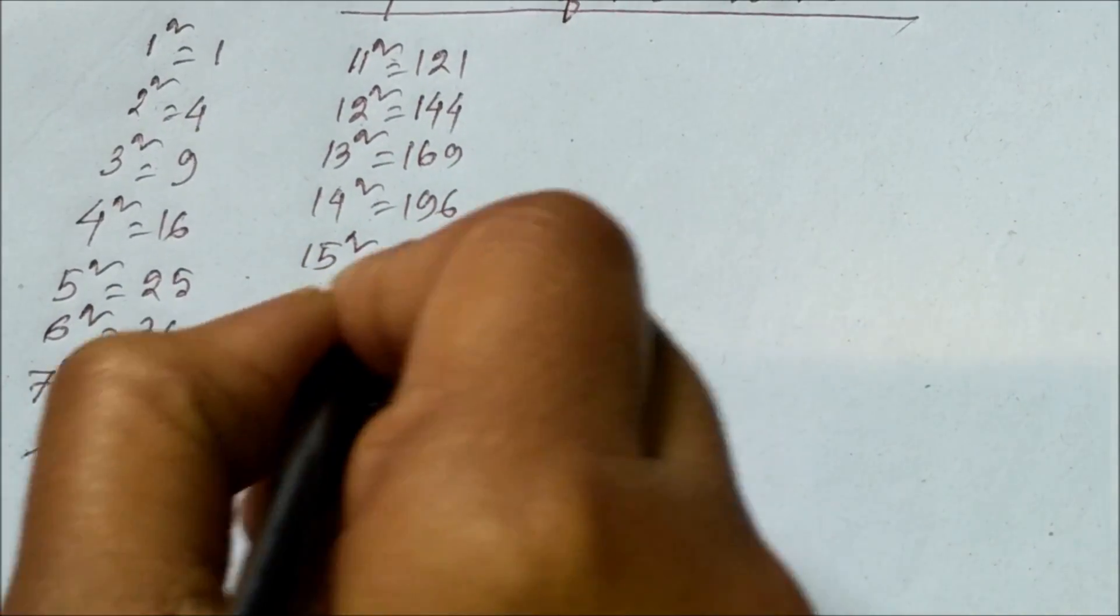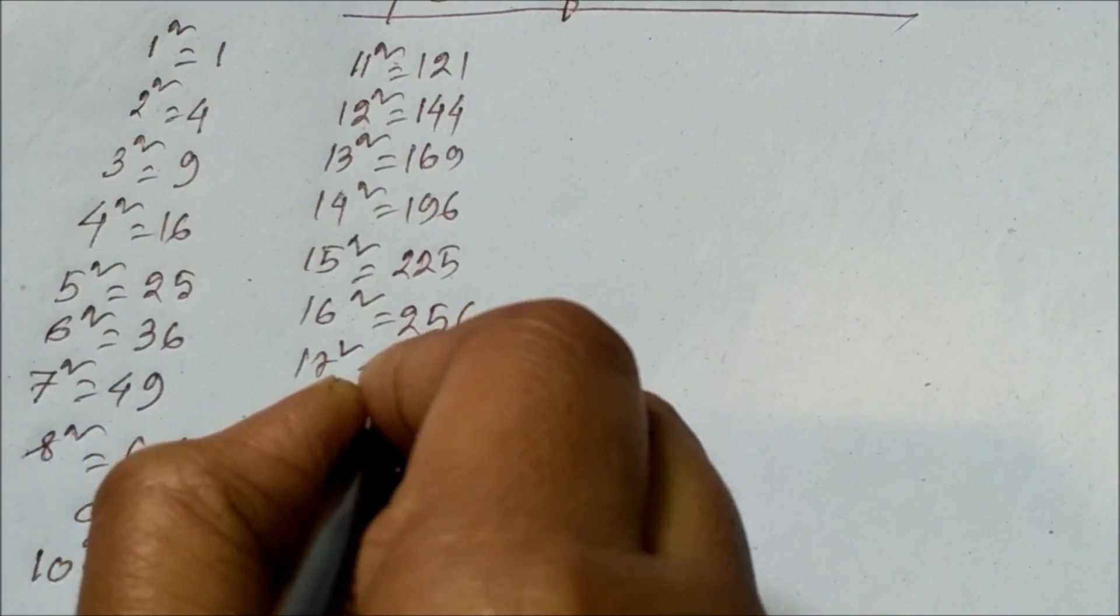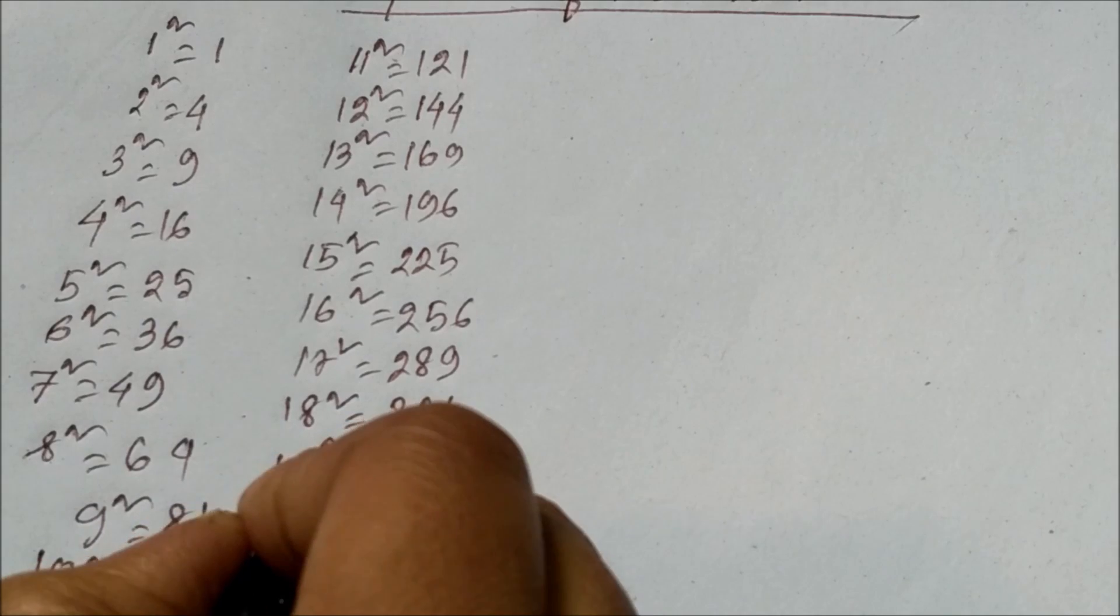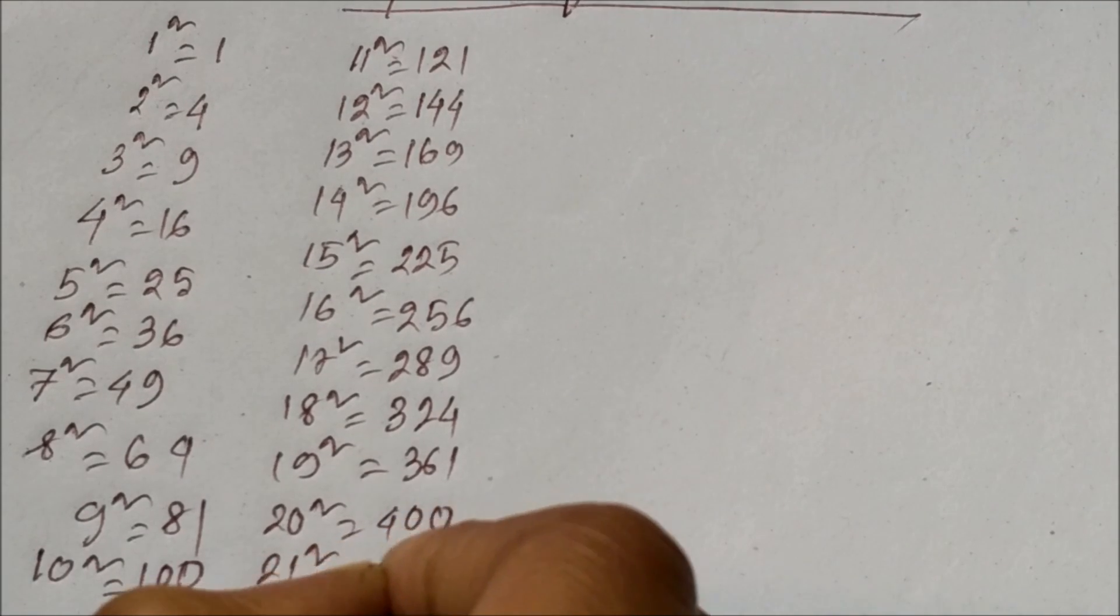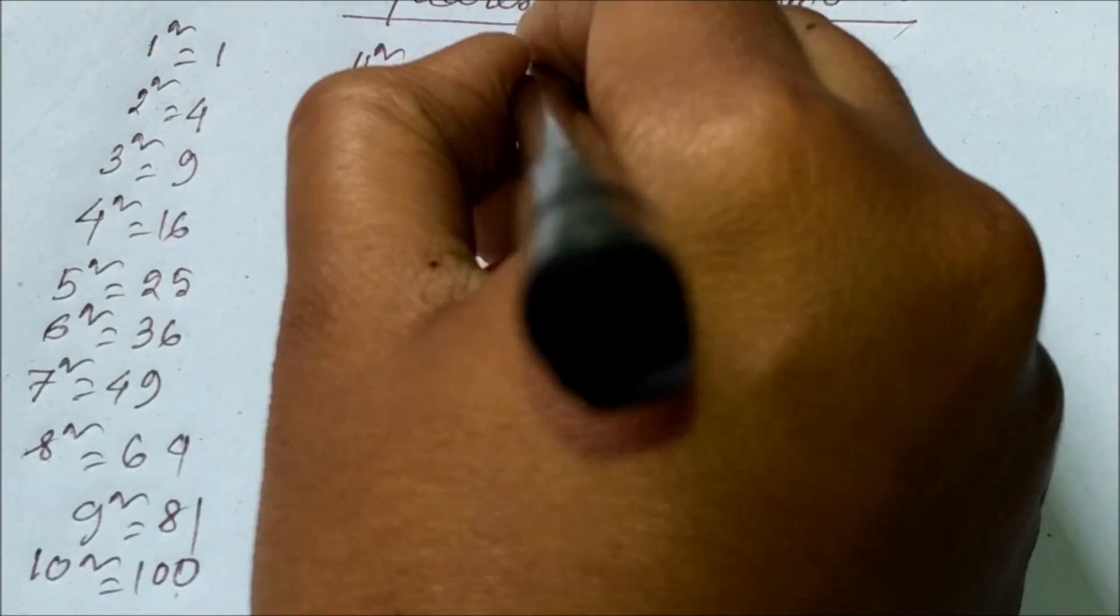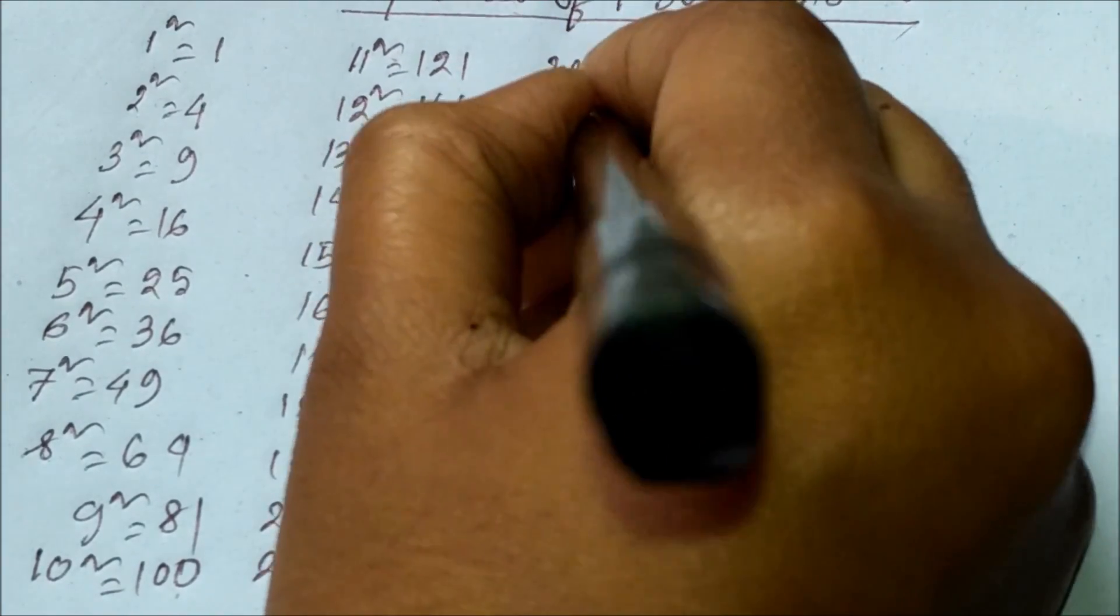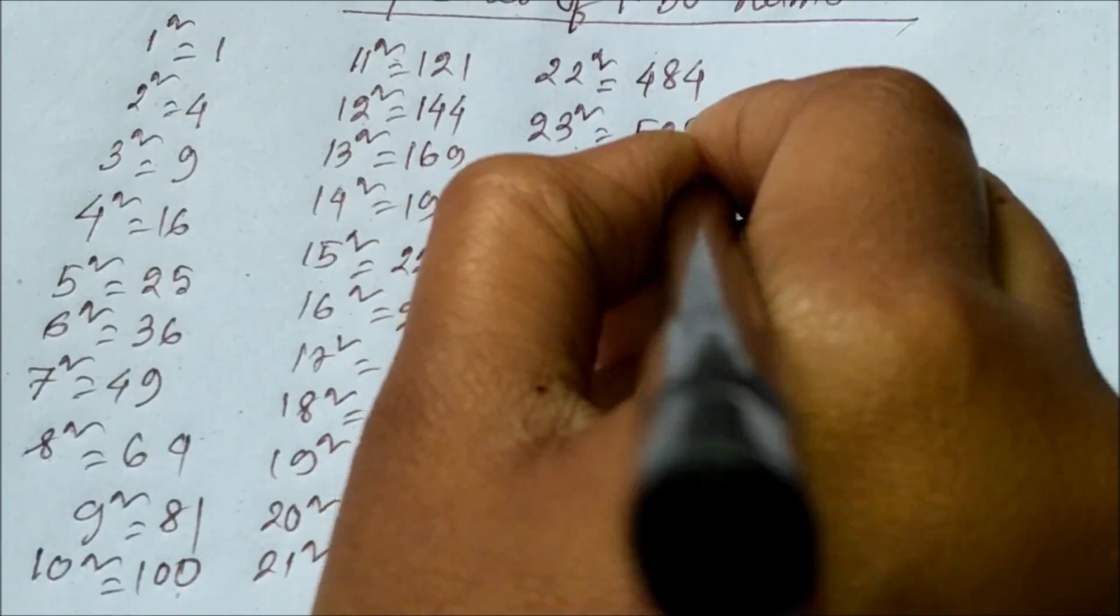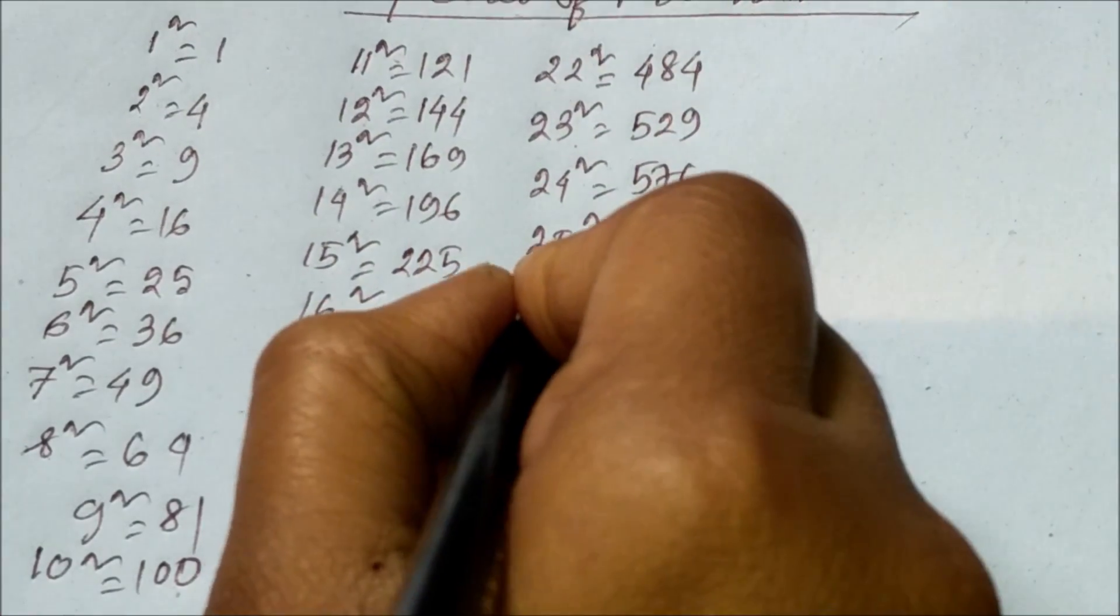17 square equals 289, 18 square equals 324, 19 square equals 361, 20 square equals 400, 21 square equals 441, 22 square equals 484, 23 square equals 529, 24 square equals 576, 25 square equals 625, 26 square equals 676.